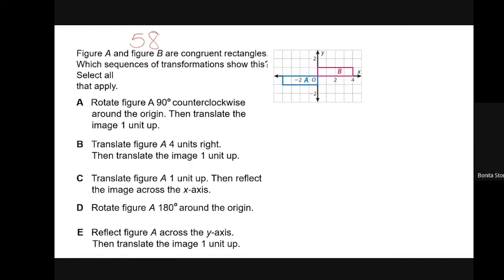About another 30 seconds and I will be there to work through that with you. A, rotate the figure 90 degrees counterclockwise around the origin, and then move it up one unit. So if I rotate A 90 degrees counterclockwise, I'm going to be going this way, and my new A would look something like this. And then if I move it up one unit, it's going to not look anything like B. So I'm going to say A is a non-starter.